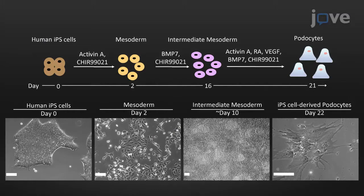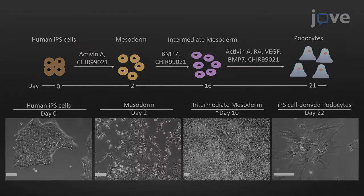Providing new tools for study in kidney disease mechanisms, this method employs cell culture medium and extracellular matrix proteins with a chemically defined composition to produce human iPS cell-derived podocytes with high purity without using subpopulation selection or genetic manipulation.